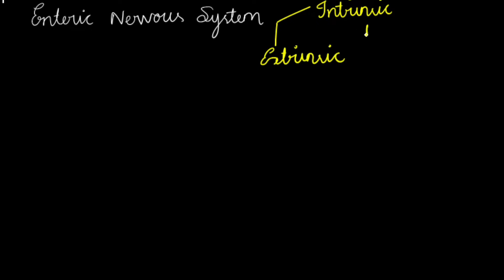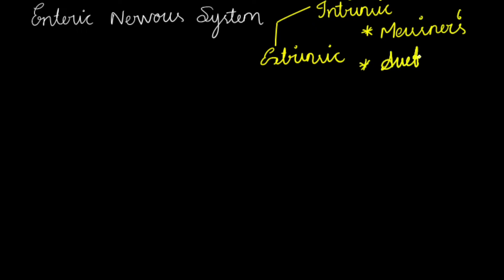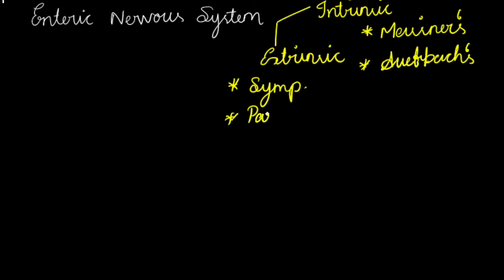In case of the Intrinsic Nervous System, we had already seen in the walls of GIT video that we have intrinsic nerve plexuses — Meissner's nerve plexus and Auerbach's plexus. In case of the Extrinsic Nervous System, we have the autonomic nervous system, that is Sympathetic and Parasympathetic.